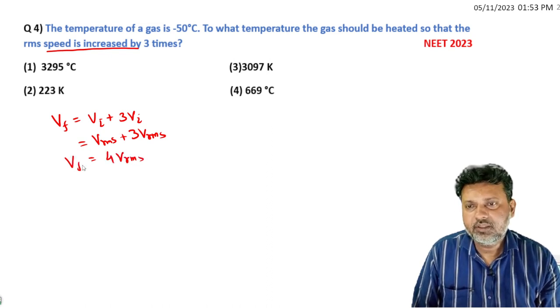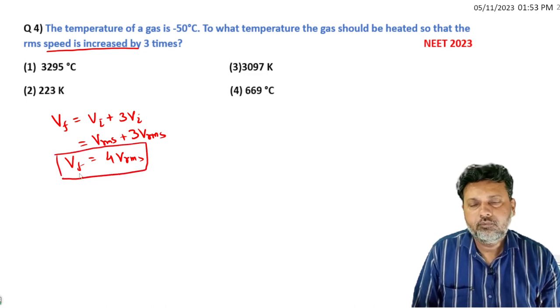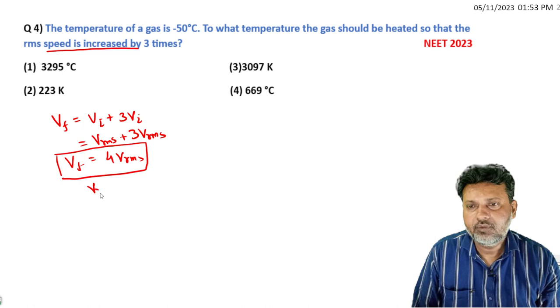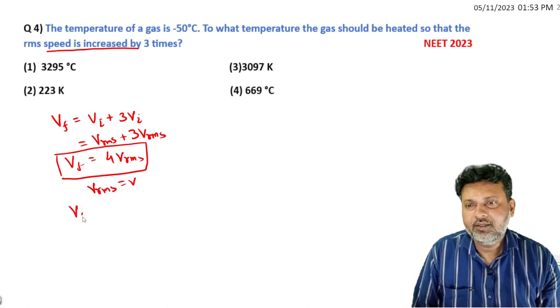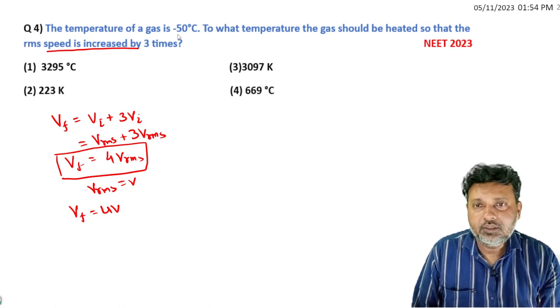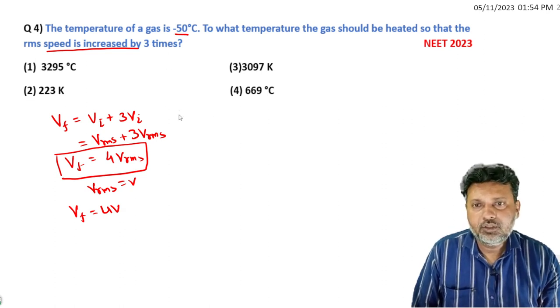So final V_RMS is four times the initial V_RMS. If we consider the initial V_RMS value as V, then final V_RMS will be 4V. Second thing: temperature is in degree Celsius, what will happen in Kelvin?